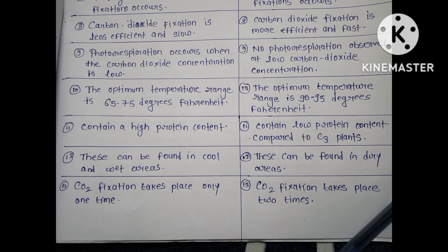C3 plants contain high protein content, whereas C4 plants contain low protein content compared to C3 plants. C3 plants can be found in cool and wet areas, whereas C4 plants can be found in dry areas.